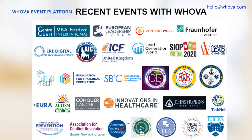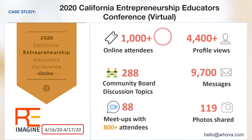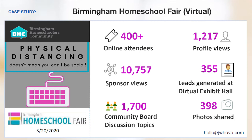Whova has been leading many in-person, virtual, and hybrid events to considerable success. At the California Entrepreneurship Educators Conference, over a thousand attendees created almost 300 discussion topics and sent 9,700 messages. They had over 80 virtual meetups, and a majority of the attendees enjoyed using it for networking. The Birmingham Homeschool Fair made their sponsors and exhibitors extremely happy — sponsor banners were viewed more than 10,000 times, and their exhibitors generated 355 leads through Whova's Digital Exhibit Hall.